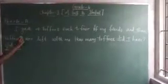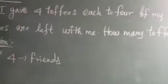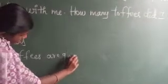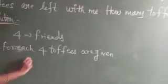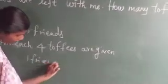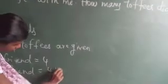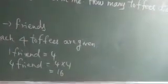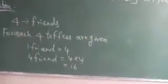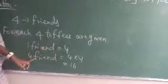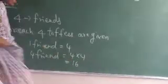How many toffees did I have? See here — how many friends are there? 4 friends. For each friend, how many toffees are given? 4 toffees. So for each friend, 4 toffees are given. For 4 friends: 4 into 4 equals 16. So 16 toffees were given to all friends.